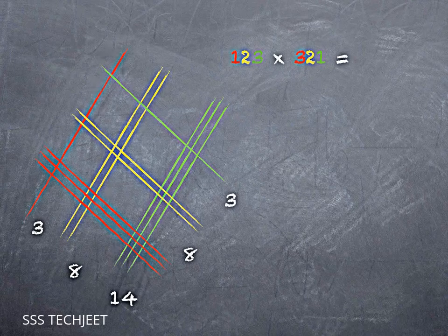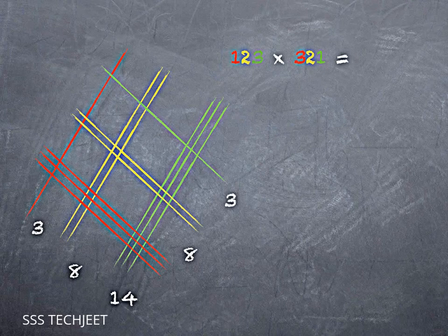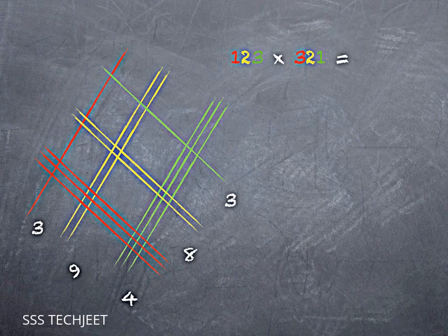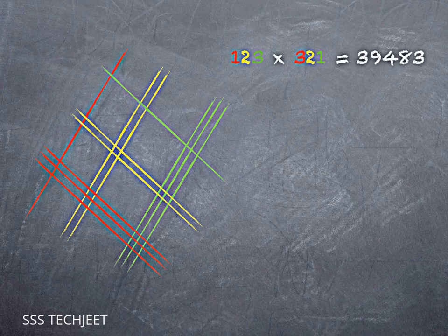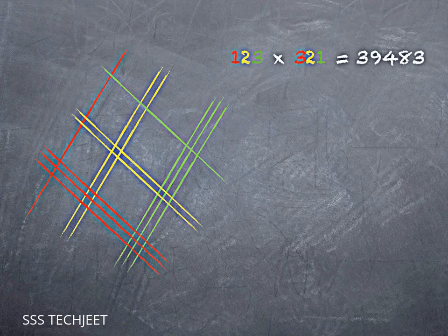Now, just like in regular multiplication, that's a problem. I can't have 14 in the hundreds place. So that really is 1,400. So I take that one and I bump it over to the thousands place. And I wind up with 39,483, which happens to be the correct answer.